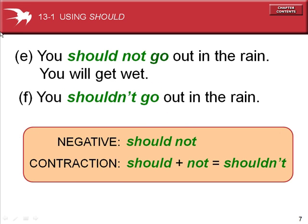To show the negative: You should not go out in the rain — you will get wet. You shouldn't go out in the rain. The negative form is SHOULD NOT. To make a contraction, SHOULD NOT is the same as SHOULDN'T.